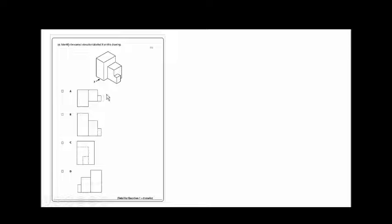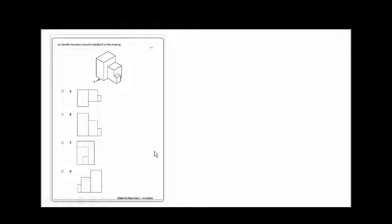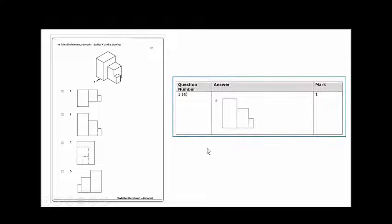If you look at this object from this side, what are you going to see? You're going to see a long section and an L-shaped section with a hidden line, because you won't be able to see that edge. A is wrong — it's what it would look like from the top. B fits what we want: long, L-shaped, and a hidden line. So B is the answer. C and D are not correct.